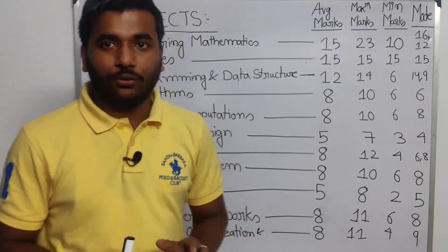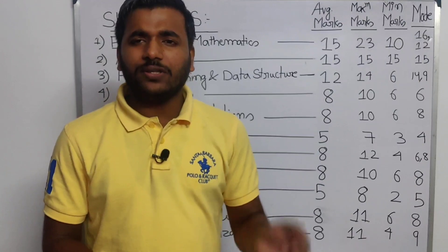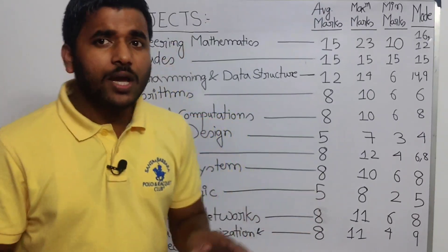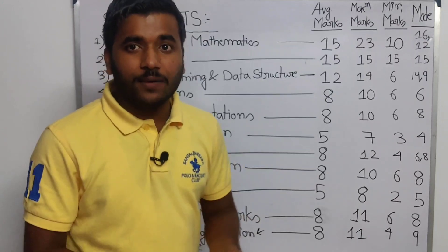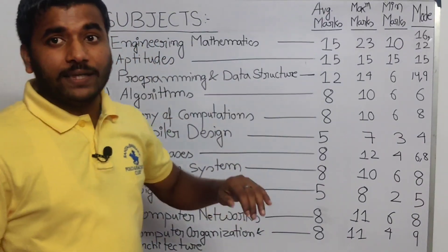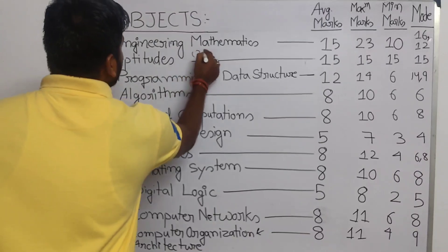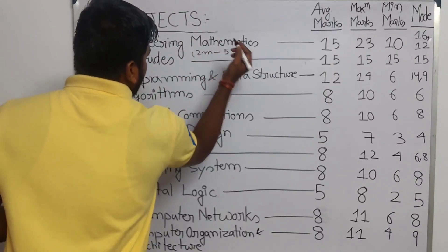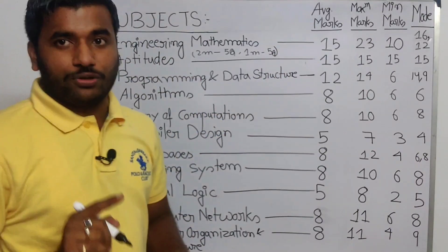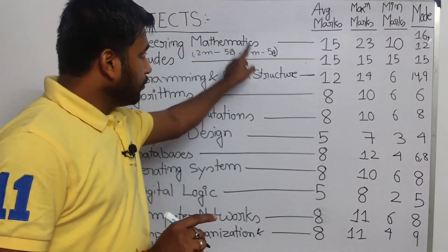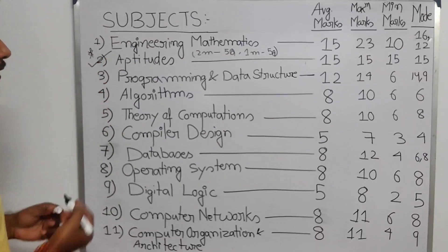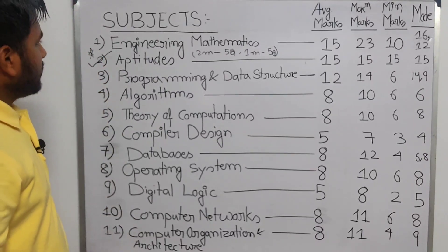Even if you study for Aptitude, you are also preparing for placement. Because in bank exams, ISRO, PSUs, and most interviews and competitive exams — including TCS — aptitude is very important. In Aptitude specifically, there are 10 questions total: five questions of one mark each and five questions of two marks each, giving a total of 15 marks.